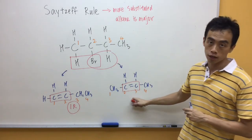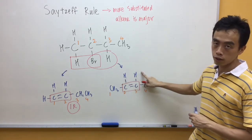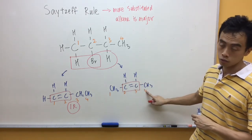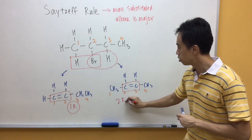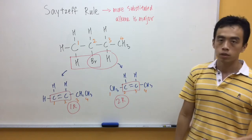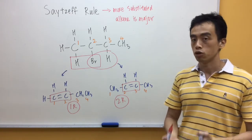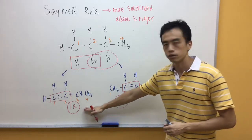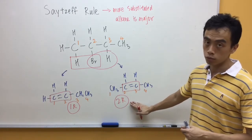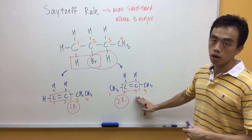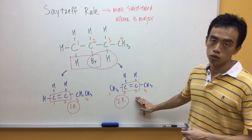Now, for the other product, we have a CH3, which is one R group, one hydrogen, two hydrogen, and another CH3, which is another R group. The CZF rule states that the more substituted alkene is the major product. This first product has one R group substituted; this second product has two R groups substituted. So the product on the right-hand side is more substituted and therefore will be the major product.